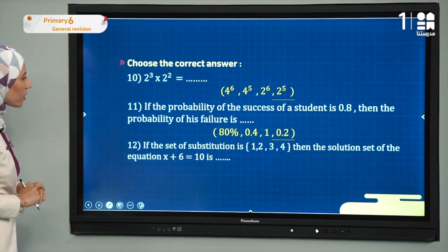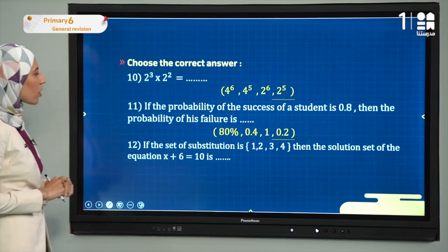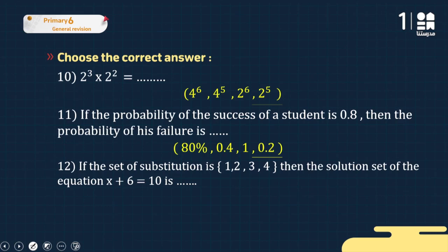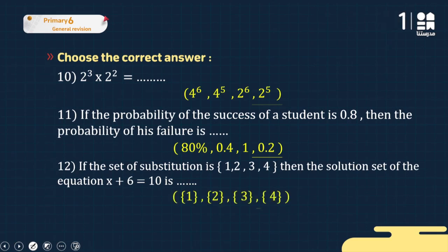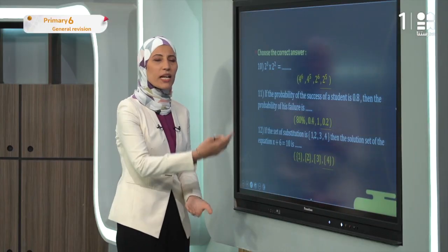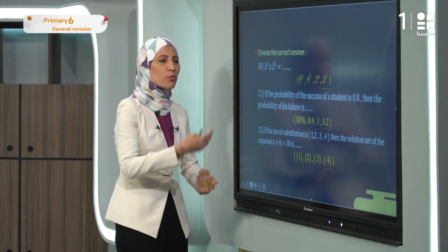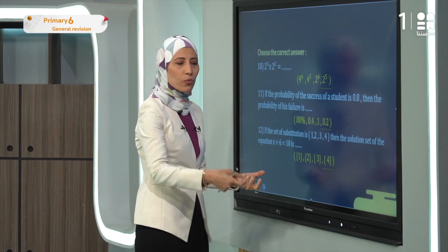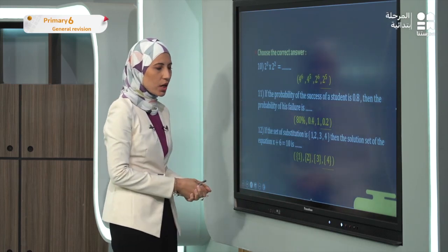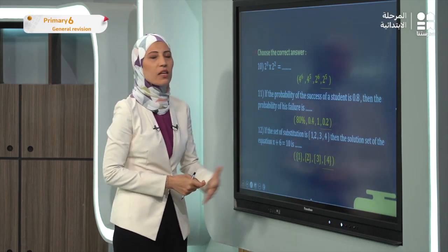Exercise twelve: given the substitution set {1, 2, 3, 4}, find the solution set of x + 6 = 10. What plus 6 gives 10? That's 4. So the solution set is {4}, since 4 + 6 = 10.